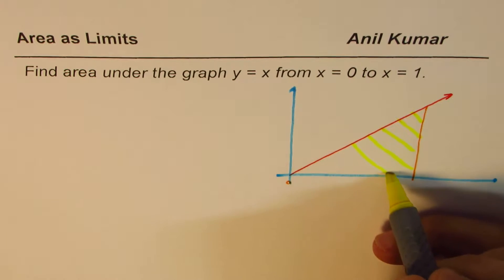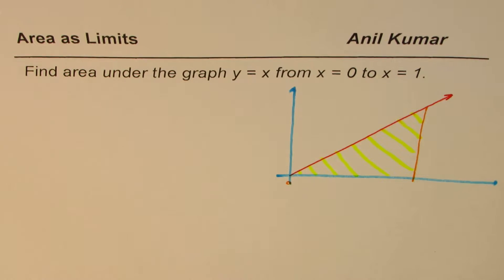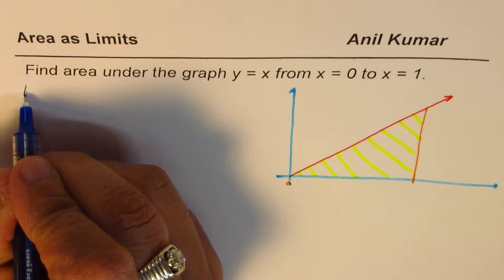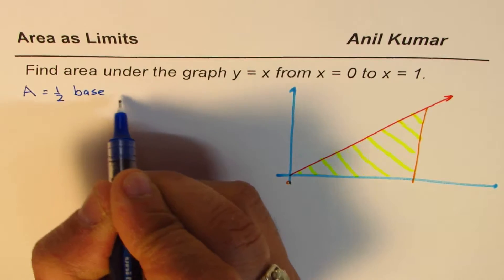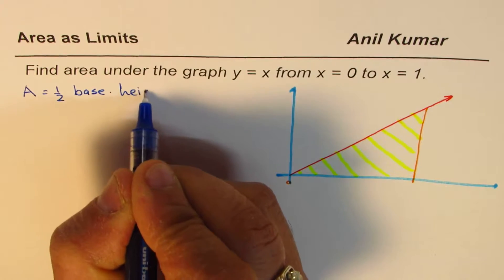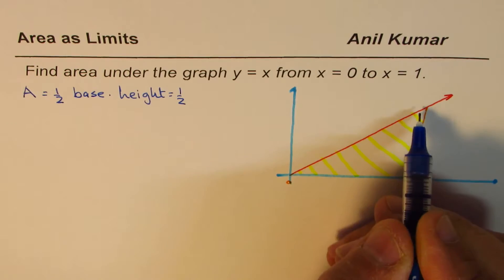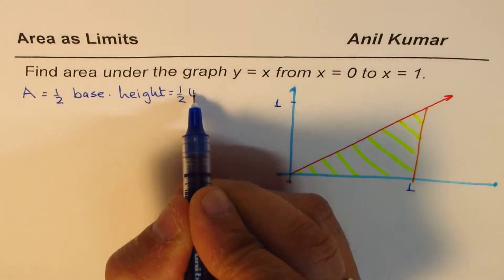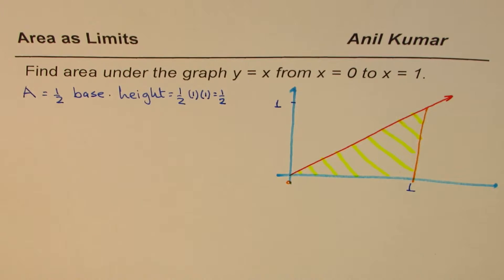You know it's just a right angle triangle, and finding the area of a right triangle is very simple. Area A equals half base times height. Base is 1 unit, and since y equals x, the height is also 1 unit. So it is half times 1 times 1, which is one half. We get half as the area of this triangle.